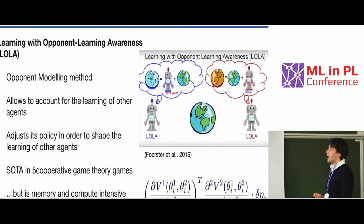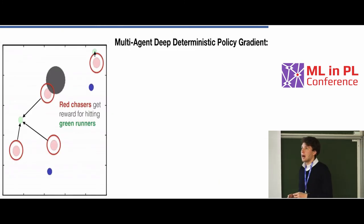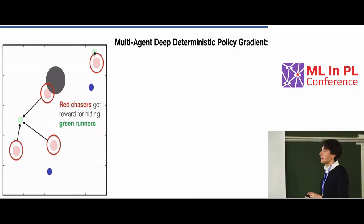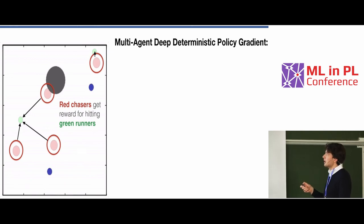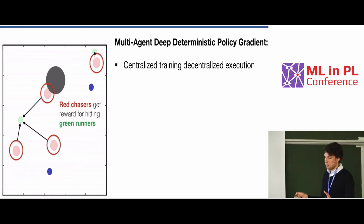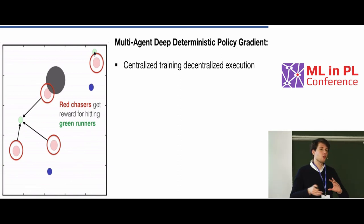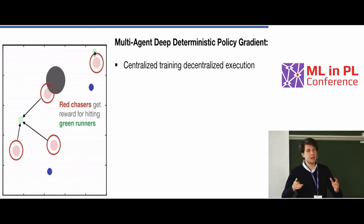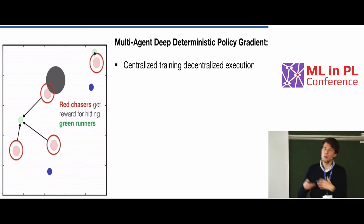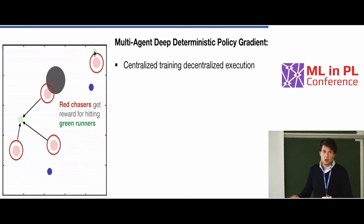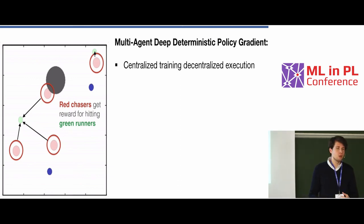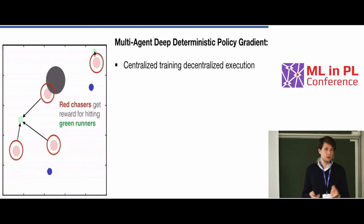And yes, we can. We can do it with the algorithm called MADDPG, which is an extension of deep deterministic policy gradient to the multi-agent scenario. What is interesting is that it uses centralized training with centralized execution. This is also very exciting for practical applications, because during training all the agents have access to other observations — they can learn not only from their own actions but also from the actions of other agents. And of course, this is decoupled at test time, so at test time the agents do not have access to other observations and have to be more individual.